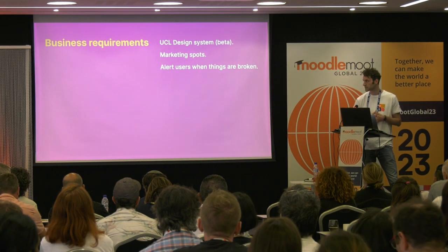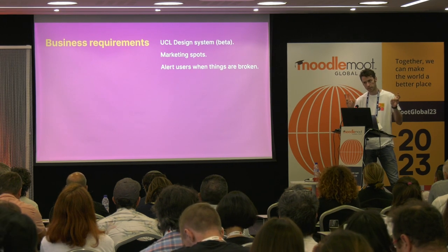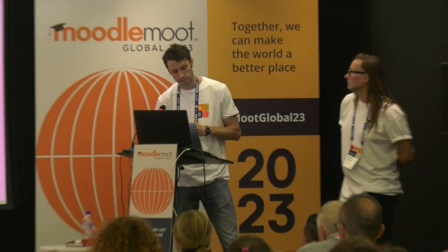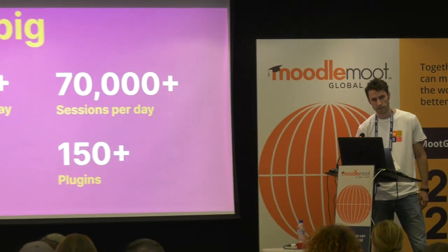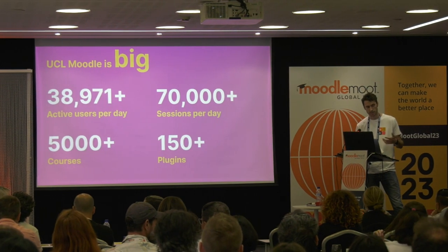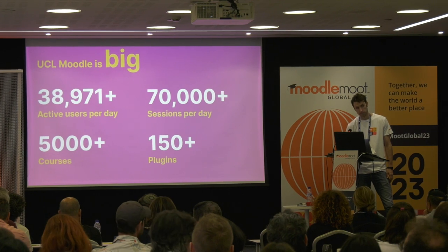We also had business requirements. A big one was the UCL design system — it was in beta, which was one of the challenges. We also wanted marking spots to advertise events at our campus on Moodle, and to alert users when things are occasionally broken. UCL is pretty big — close to 40,000 active users a day, 70,000 browser sessions, plus 5,000 courses per academic year and about 150 plugins. This update was definitely a team effort.